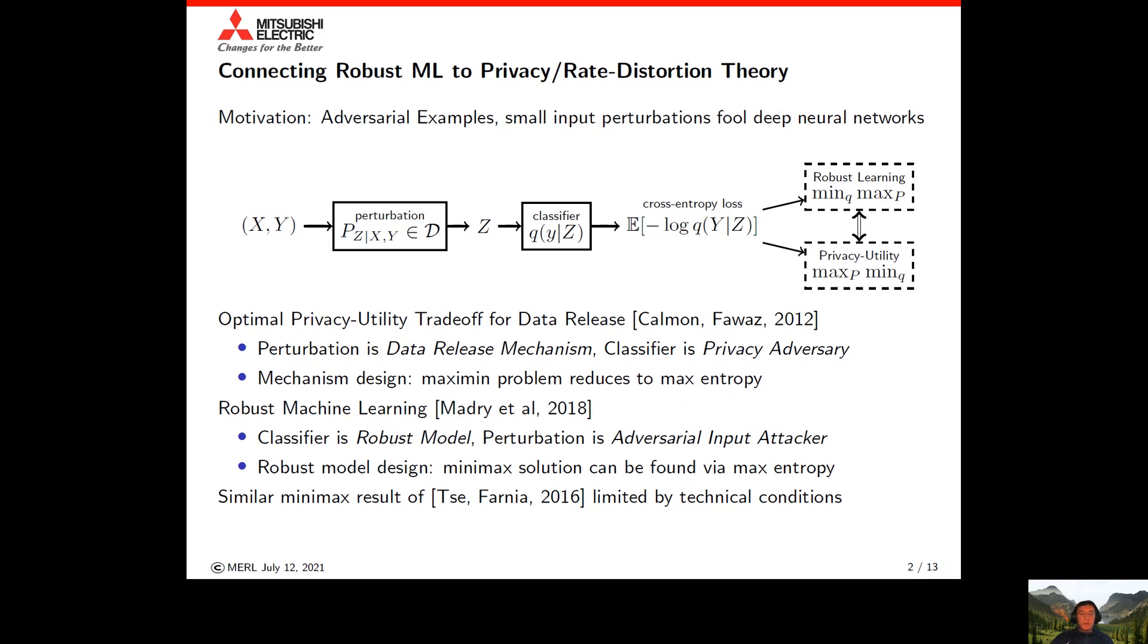The privacy-preserving data release problem was studied from an information theoretic perspective that considered the optimal privacy utility trade-offs. One would interpret the perturbation mechanism as some data release mechanism, and the classifier as a privacy adversary trying to recover sensitive information Y from the released data Z. The problem of mechanism design was posed as a max-min problem and was shown to reduce to a maximum entropy problem.